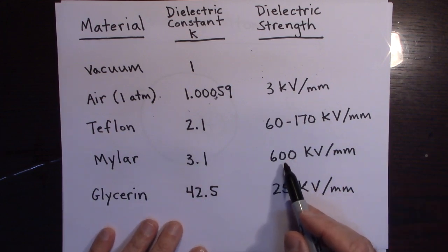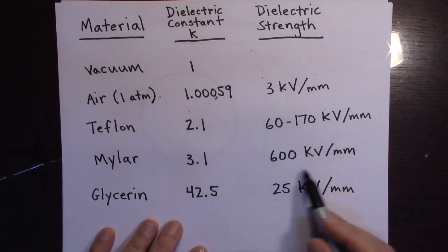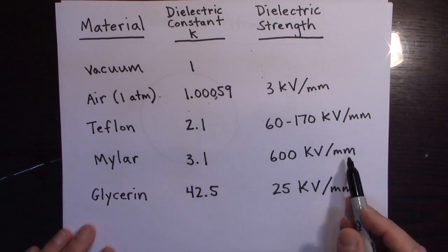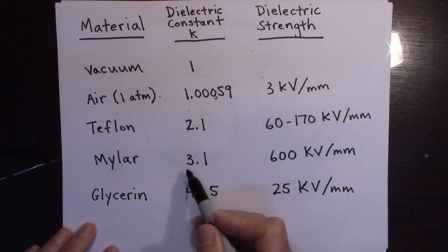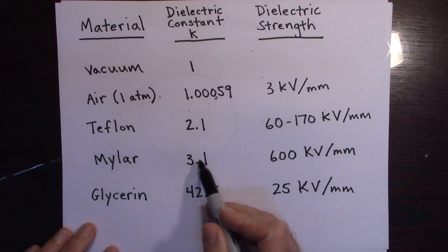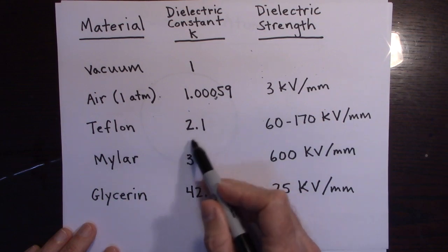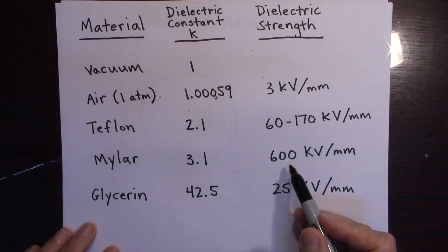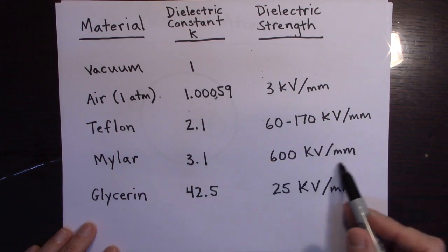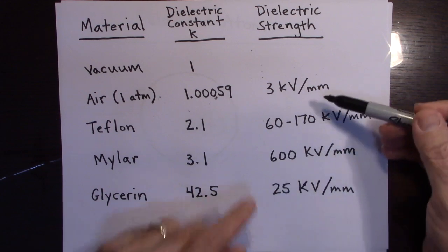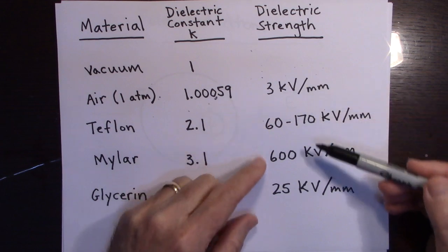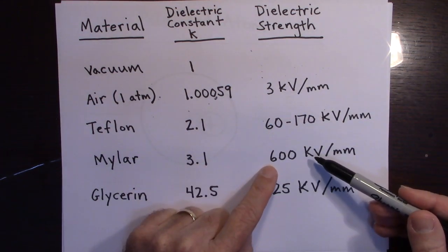Mylar can withstand even a greater electric field. 600 kilovolts per millimeter before it breaks down. So, mylar is good in that when you put it between a capacitor, not only does the capacitance go up by 3.1 times, but it also allows the electric field to go, normally you have air, like if you have an air capacitor, it goes from that electric field to this. This is the maximum it can withstand before it breaks down.